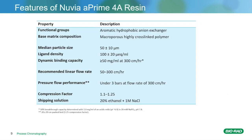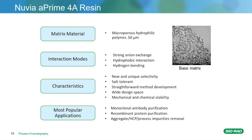Now I'm going to transition over to the Nuvia A'4A, which is the other resin that was evaluated for this study. It is also a 50 micron particle like the Nuvia HPQ. It is a mixed mode with an aromatic hydrophobic anion exchange ligand. It can handle higher flow rates up to 300 centimeters an hour and has very good selectivity. It is a hydrophilic polymer, so you won't see non-specific hydrophobic interactions that you might see from an agarose-based resin. It has strong anion exchange and hydrophobic interactions as its main modes, some hydrogen bonding. It is salt tolerant, offering new and unique selectivities, with straightforward method development offering a wide design space, and good mechanical and chemical stability.